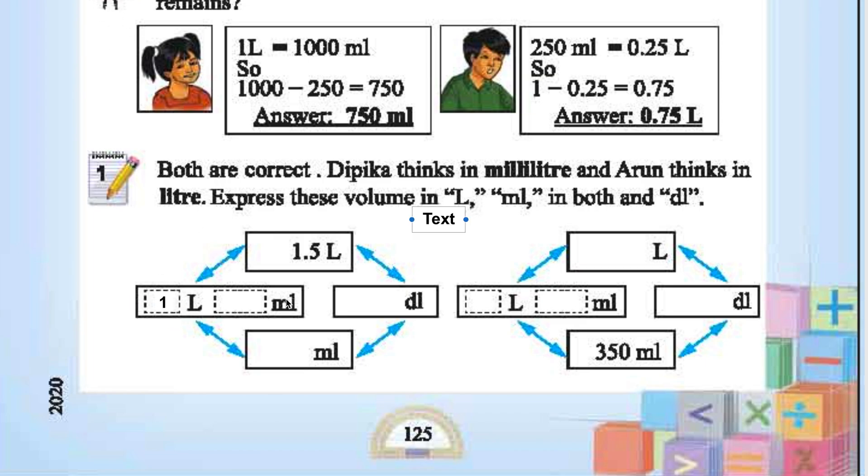1.5 liter is 1 liter 500 milliliter. In deciliter it is 15 deciliter.